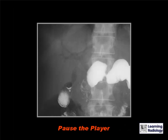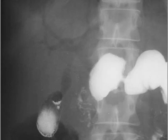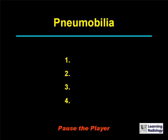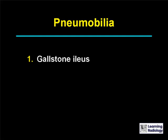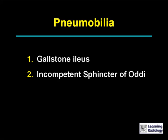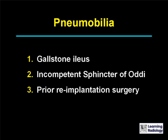The differential is for pneumobilia. There are four causes listed: gallstone ileus, an incompetent sphincter of Oddi, prior re-implantation of the common bile duct during a surgical procedure, and gas-forming cholangitis.